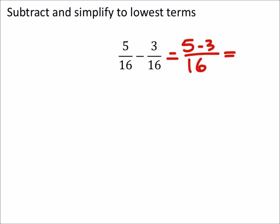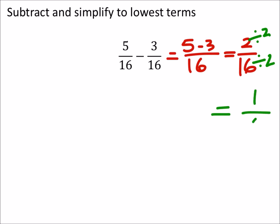And 5 minus 3 is 2, over 16. Both of these are divisible by 2, so to simplify this — and we could use long division if we wanted to — but this would give us one-eighth.